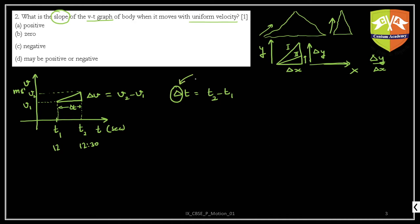Don't get confused by the delta symbol — delta means 'change,' and the quantity written next to it is what's changing. So delta t means change in time, delta v means change in velocity, delta p means change in pressure. When you write delta T it means change in temperature, like the change from day to night.